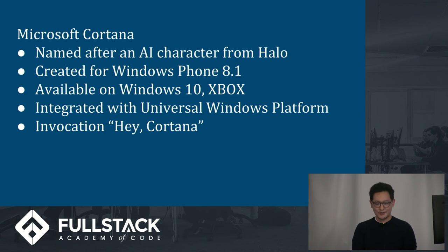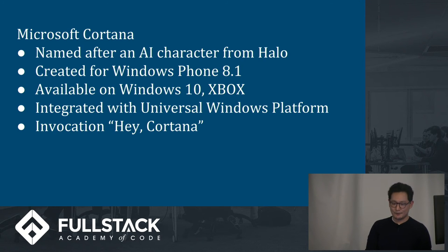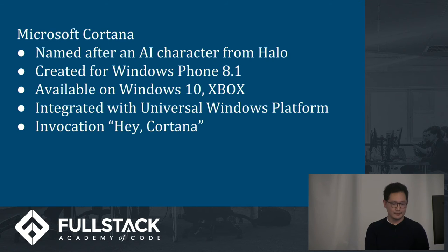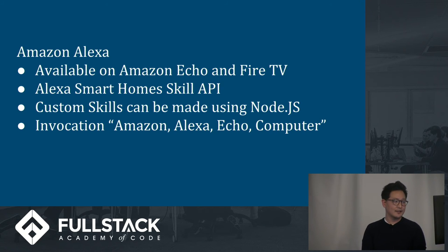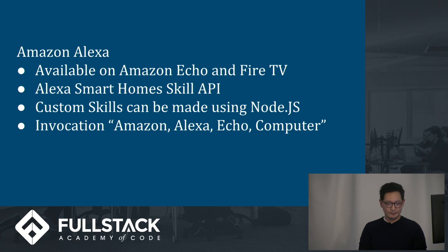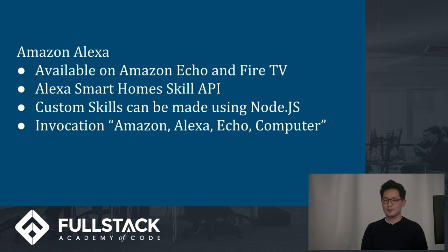Cortana is actually the most human-like of these systems. It has a team of writers, screenwriters, playwrights, novelists, and essayists working to provide a more human-like interaction. We also have Amazon Alexa, which was one of the highest selling products last year. Alexa uses 'skills,' which are essentially applications for your intelligent personal assistant, and any developer can contribute to the Amazon skills library.